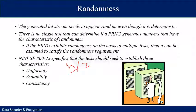Consistency refers to the behavior of the generator being consistent across different starting values, i.e., seeds. It is inadequate to test the PRNG based on output from a single seed, or a true random number generator based on output from a single physical output.